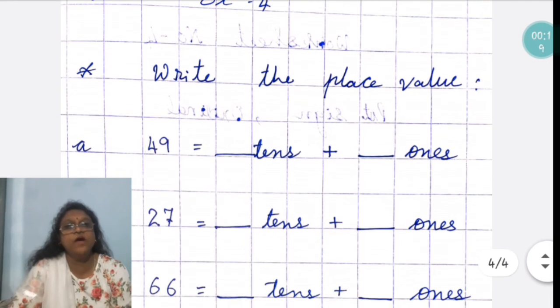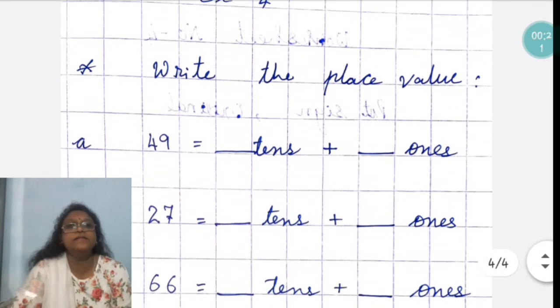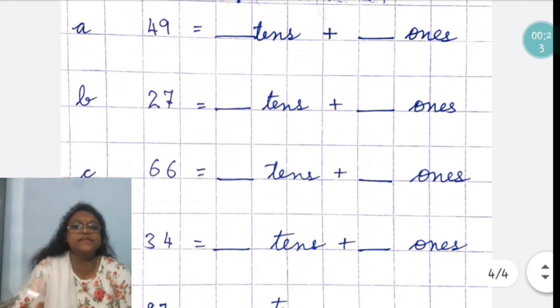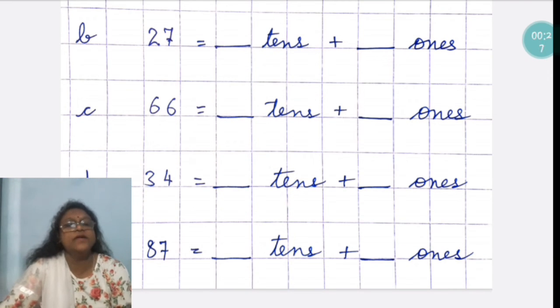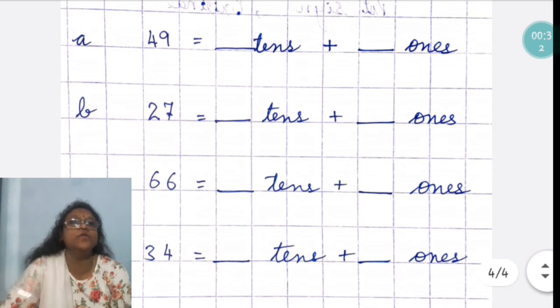Now, fourth exercise. You have to do 49, 27, 66, 34 and 87. In this, I have shown you how to write the place value.